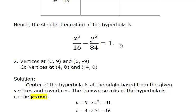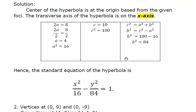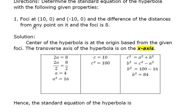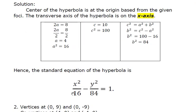You might be wondering why the equation takes this form. The foci are at (10, 0) and (-10, 0), so they lie on the x-axis. Therefore, the transverse axis is the x-axis, which gives us the form x-squared over a-squared minus y-squared over b-squared equals 1 — specifically x-squared over 16 minus y-squared over 84 equals 1.